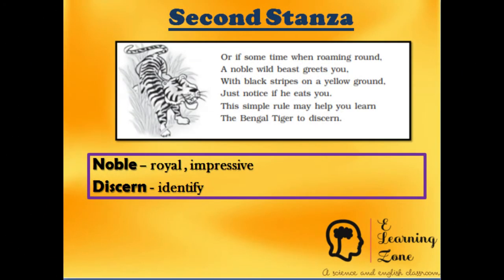Now let's go through the second stanza: 'Or if sometime when roaming round a noble wild beast greets you, with black stripes on a yellow ground, you'd notice if he eats you. This simple rule may help you learn the Bengal Tiger to discern.'